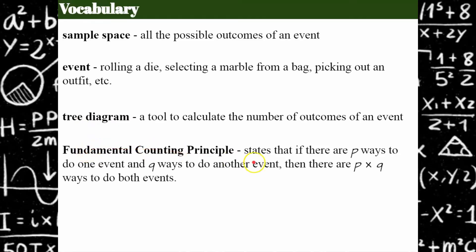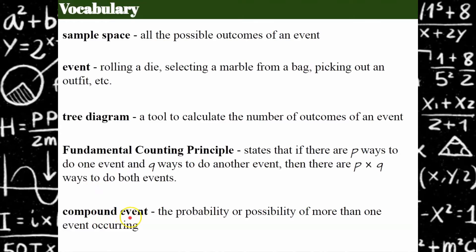And then we have the fundamental counting principle. This states that if there are p number of ways to do one event and q number of ways to do another event, then there are p multiplied by q ways to do both events. So the fundamental counting principle is a way to show how to multiply all the outcomes of different events to get the total number of outcomes for all the events together, and I will model this for you. Last, our compound event — that's the probability or possibility of more than one event occurring. One example we'll do is rolling a number cube and flipping a coin. Those are two different events, and if you roll two number cubes, that's also two different events because you have two different dice with two different outcomes.